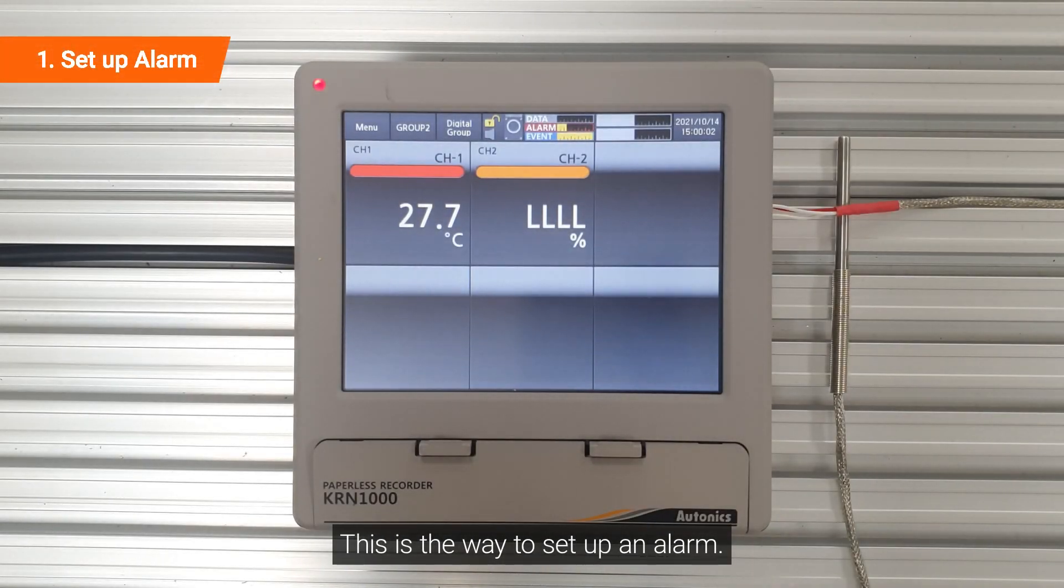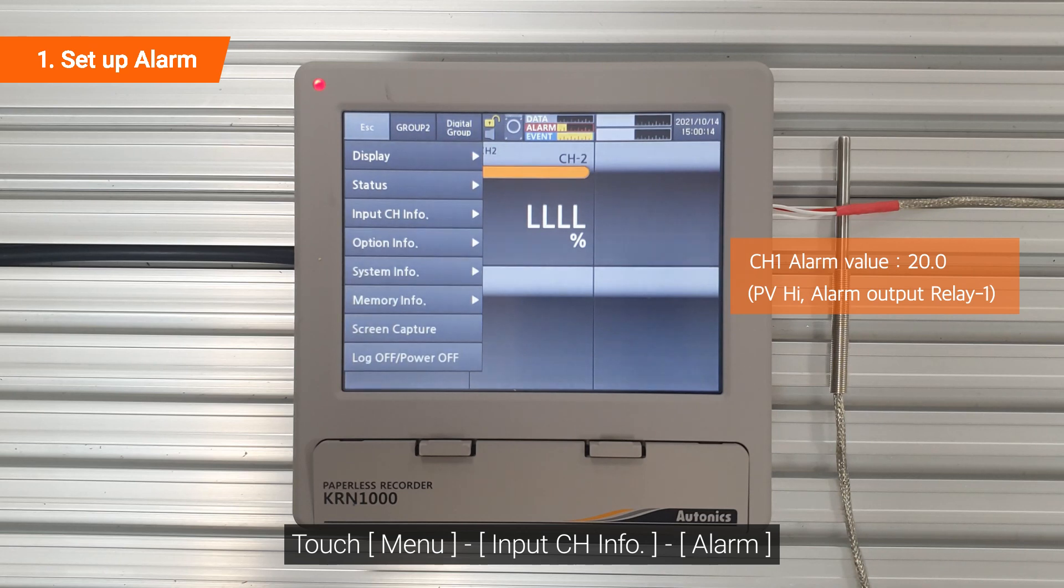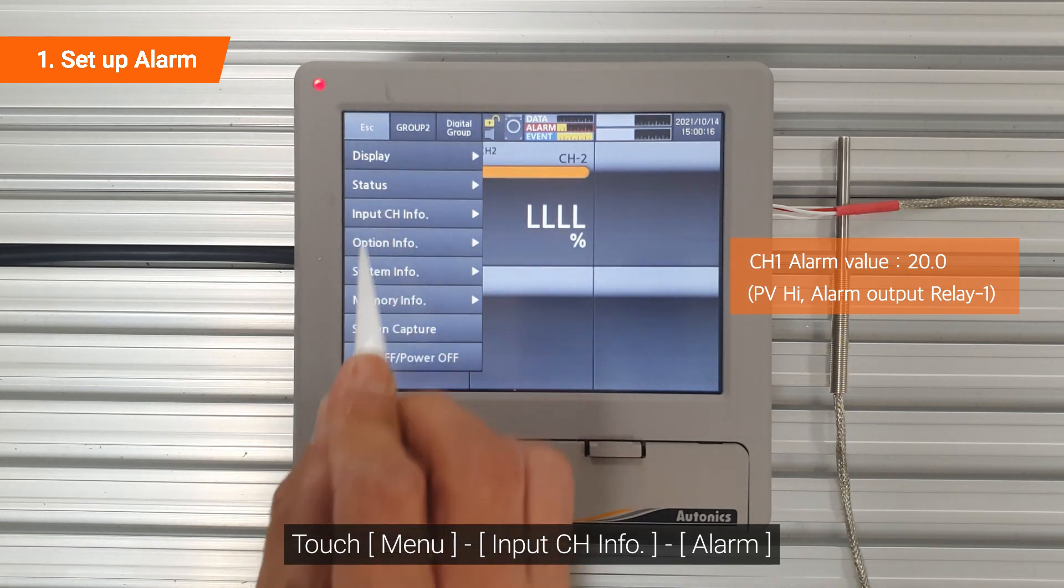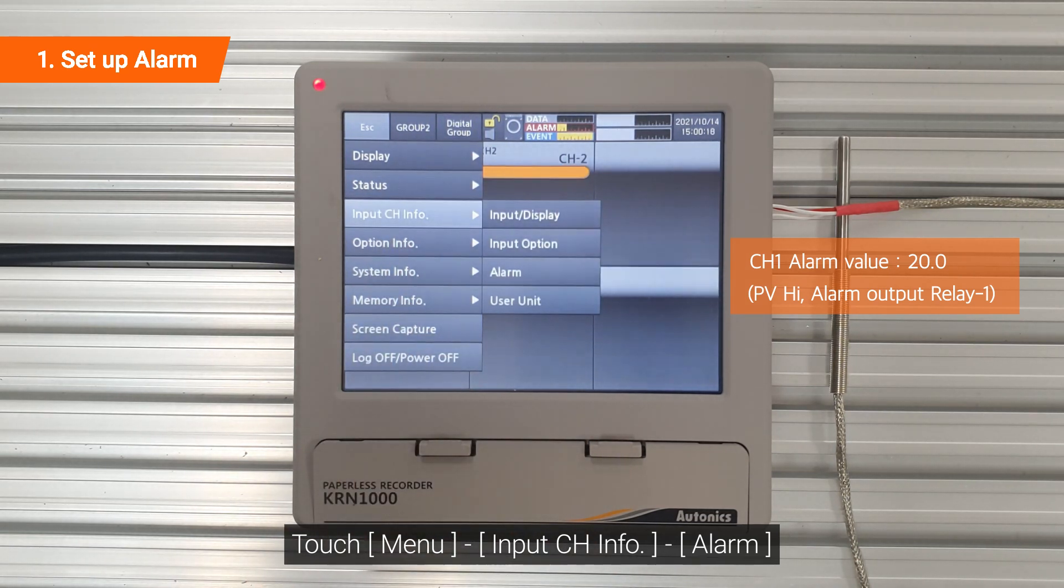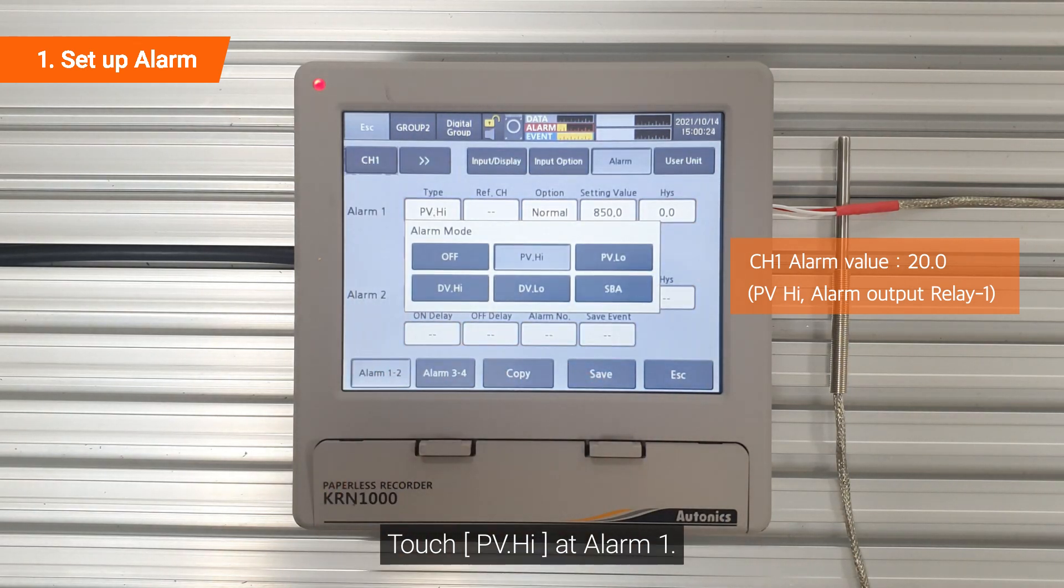This is the way to set up an alarm. Touch menu, input channel info, alarm. Touch PV point high at alarm 1.